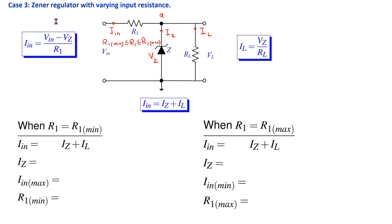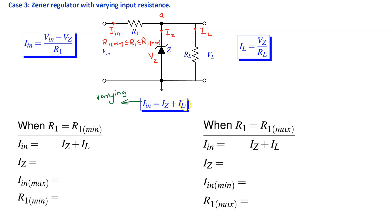Finally, consider Case 3: the Zener regulator with varying input resistance. The Zener diode provides a constant output voltage VZ for a range of R1 values. Since IIN = (VIN − VZ) / R1 depends on R1, IIN is varying. Since IL = VZ / RL is independent of R1, IL is fixed. As a consequence, IZ also varies.